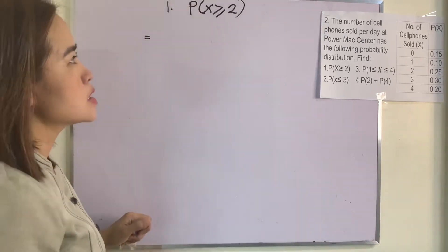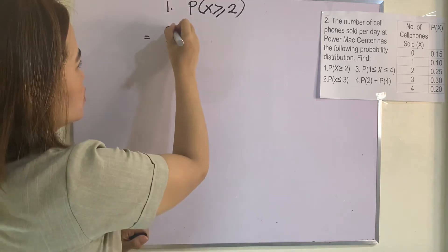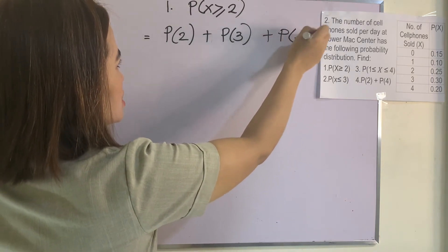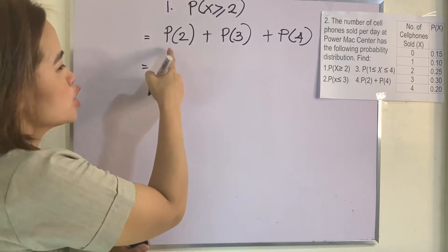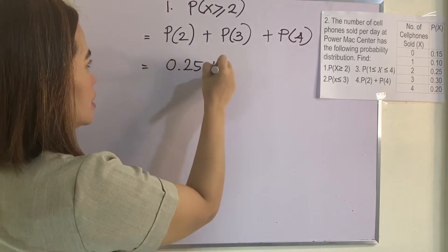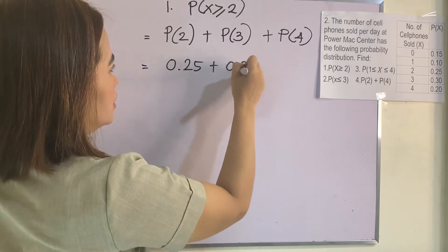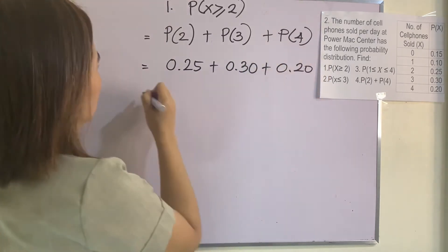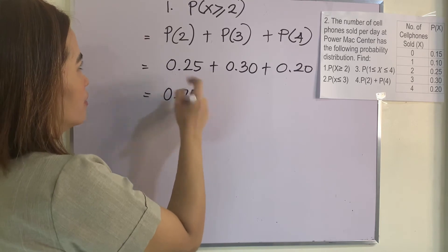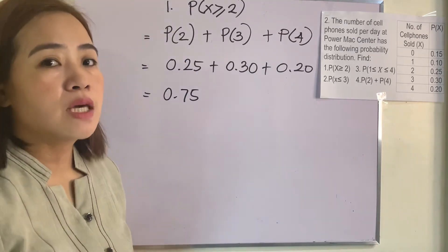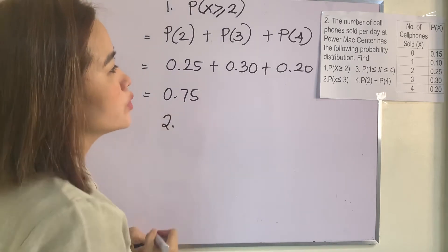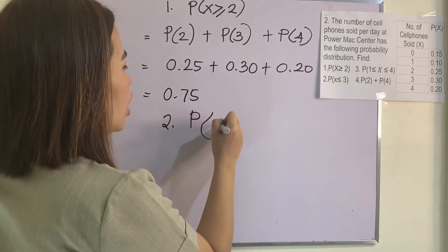For number 1, P(X ≥ 2): the values greater than or equal to 2 are 2, 3, and 4. So P(X ≥ 2) = P(2) + P(3) + P(4) = 0.25 + 0.30 + 0.20 = 0.75. Remember that a probability should be between 0 and 1, and 0.75 satisfies that condition.